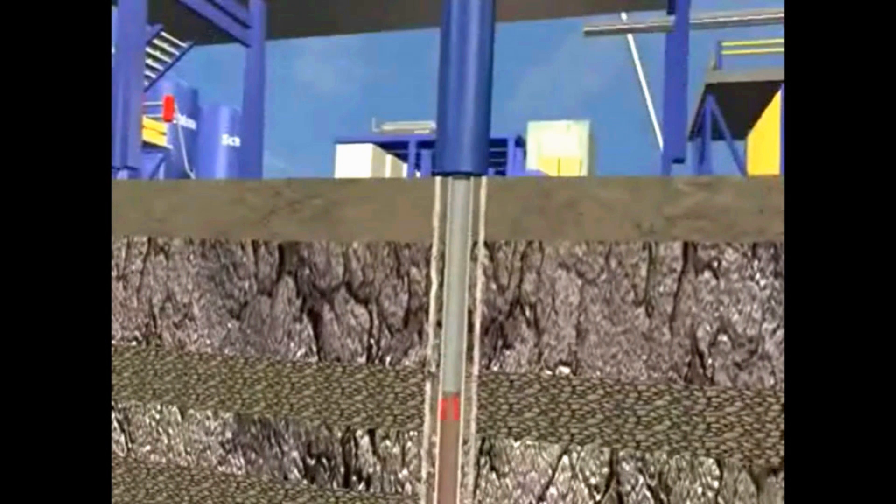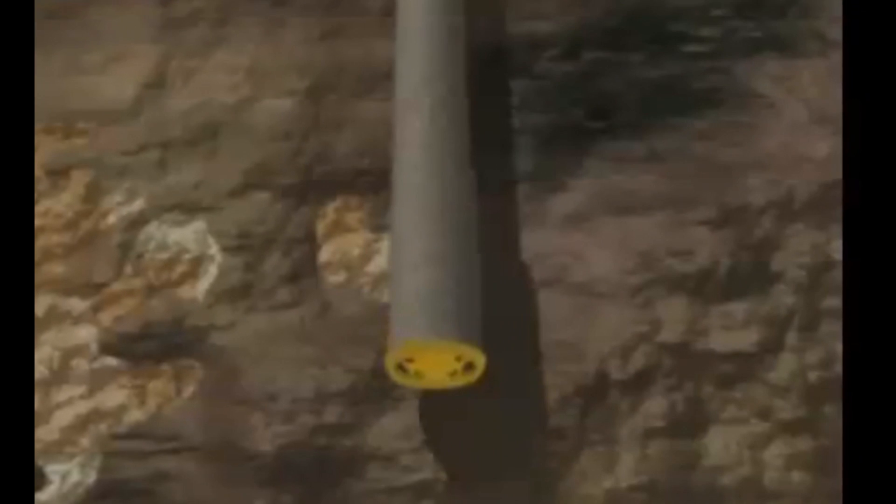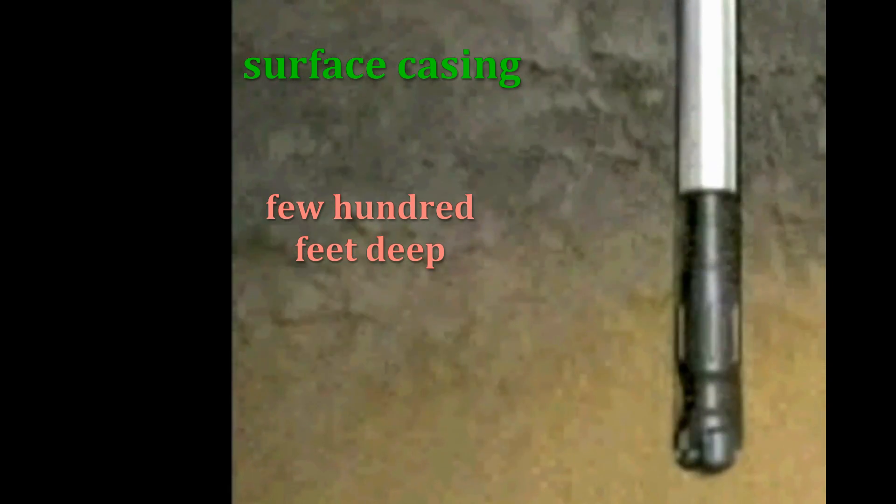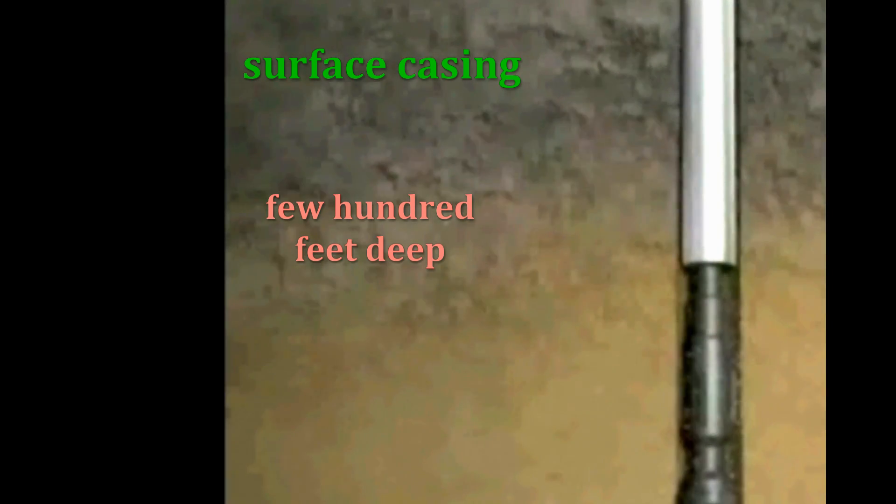When inserting the initial casing strings, the drilling operation drills a large diameter surface hole to penetrate unconsolidated surface material and protect sources of fresh water in the nearby water tables. Called the surface casing string, it is usually a few hundred feet deep and runs to the bottom of the hole at the beginning when drilling first begins. Once in place, cement slurry is then pumped down the inside of the pipe and circulated up the backside annular space between the casing and hole.